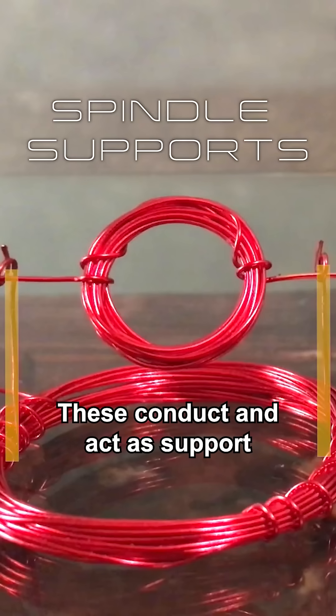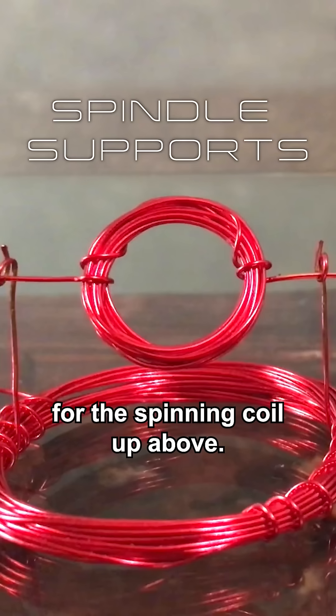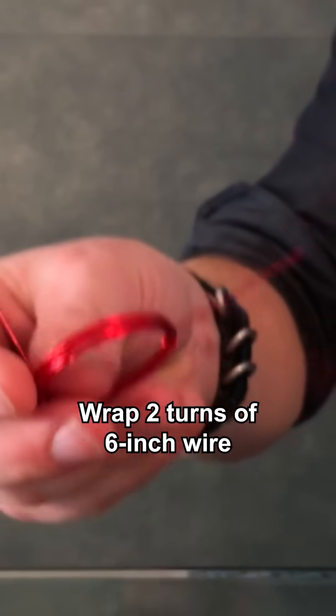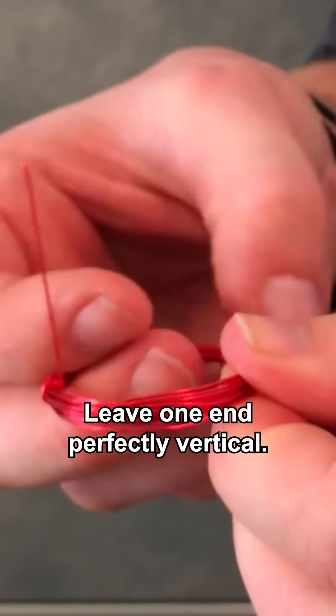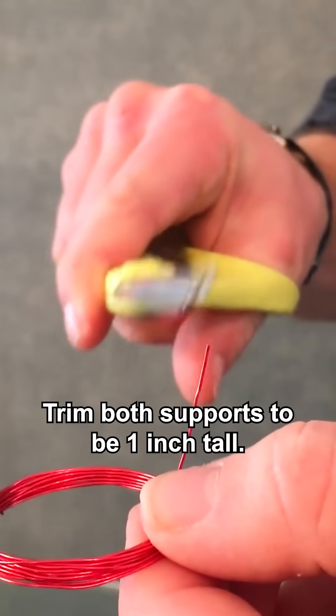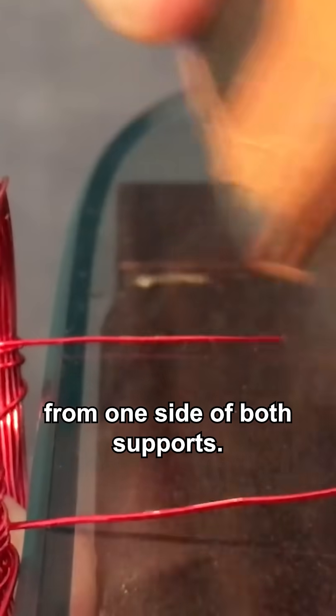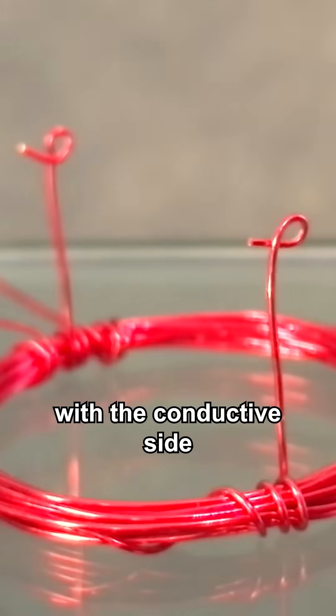Spindle supports. These conduct and act as support for the spinning coil up above. Wrap two turns of six-inch wire around the opposite side of the base as the first support. Leave one end perfectly vertical. Trim both supports to be one inch tall. Scrape off the enamel from one side of both supports. Bend them in a loop with the conductive side facing inward.